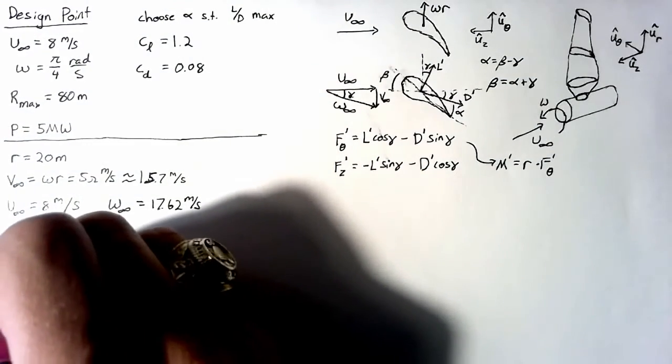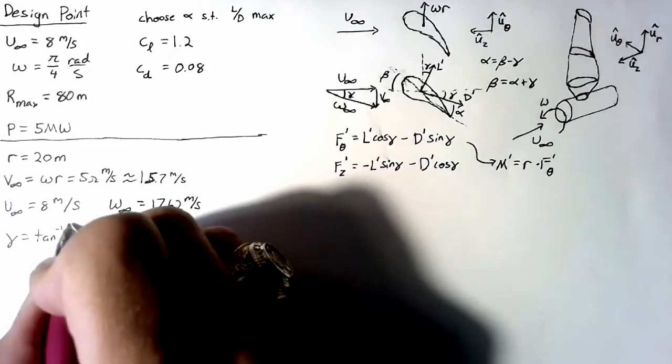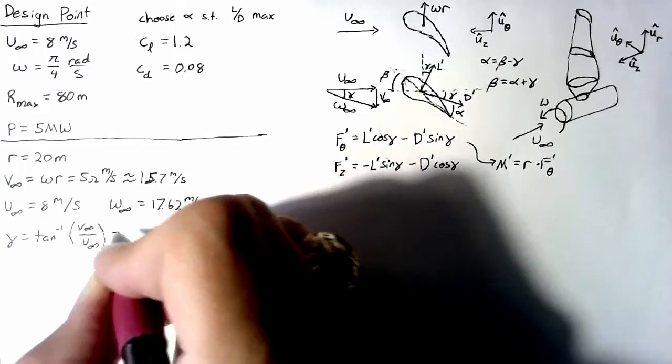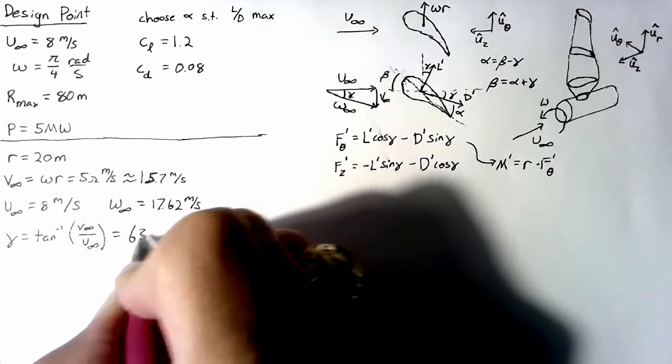Alright, at this point we can calculate gamma, and I'm going to say that it's equal to the arctangent of V divided by U. And that ends up being right at 63 degrees.